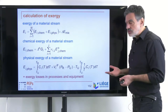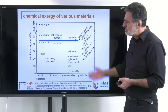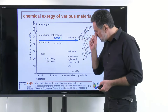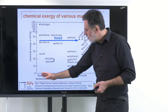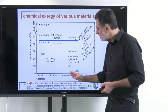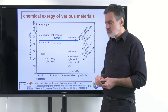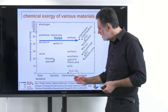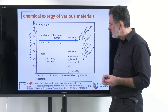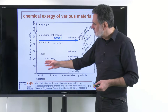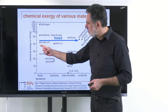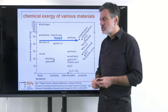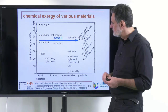Now let's do that. We plot the chemical exergy in megajoules per kilogram for different types of materials classified as fossil feedstock, biomass, intermediates, and products. We see for fossil feedstock: coal, crude oil, methane/natural gas, and hydrogen, as well as the other groups.